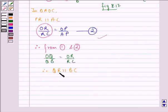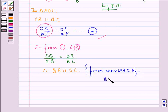So using this we get that QR is parallel to BC from converse of basic proportionality theorem. Hence proved. So I hope that you understood the question and enjoyed the session. Have a good day.